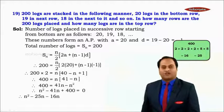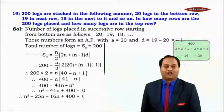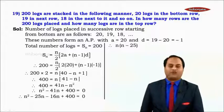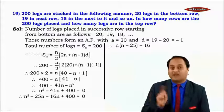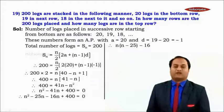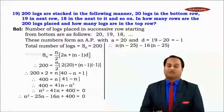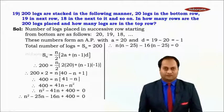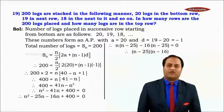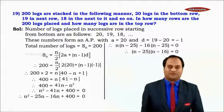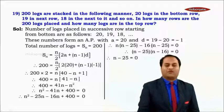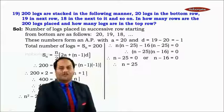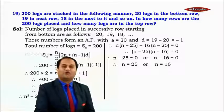Factorizing: n² − 25n − 16n + 400 = 0. Taking common factors: n(n − 25) − 16(n − 25) = 0, giving (n − 25)(n − 16) = 0. Therefore n = 25 or n = 16.